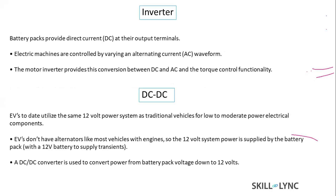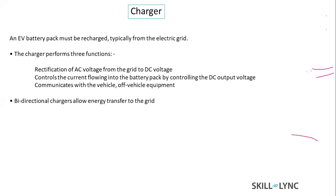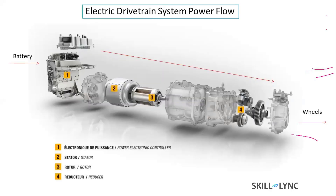To summarize the key components: the inverter inverts DC to AC and supplies current to the motor. The DC-DC converter steps down from the high-voltage battery pack to power the low-voltage auxiliary batteries. The charger is a device used for charging the batteries from AC mains.